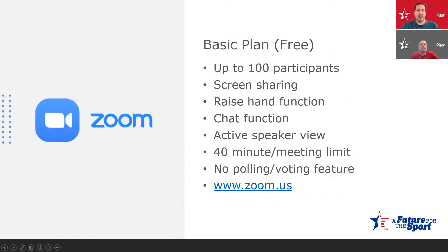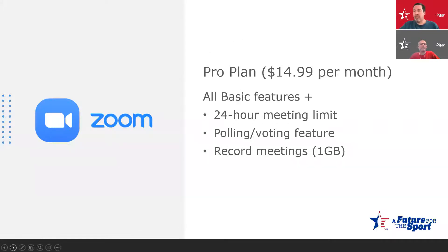The next one is Zoom. Zoom outweighs all the other platforms for the free version. The free version has a raised hand, a private and group chat function, and active speaker view, which makes it easy to see who's talking and helps you know who may have made a motion or seconded a motion. The free version only has a 40-minute limit on meetings, and there is no polling and voting feature. The paid version has all the same functionality, but also gives you the ability to record meetings, go to breakout rooms, and allows for polling and voting. This is what we're using here today.